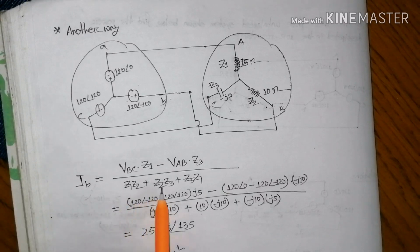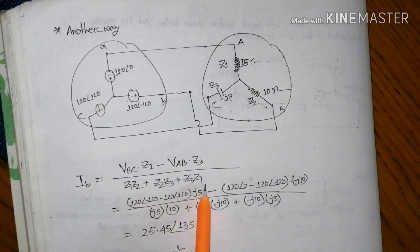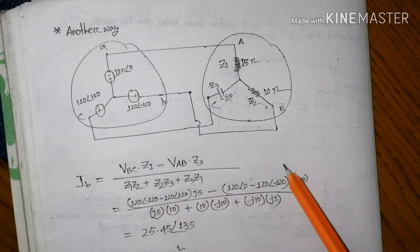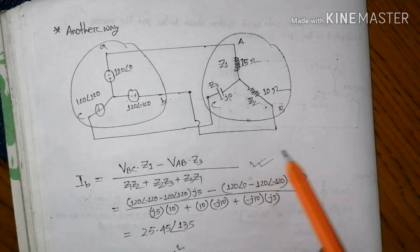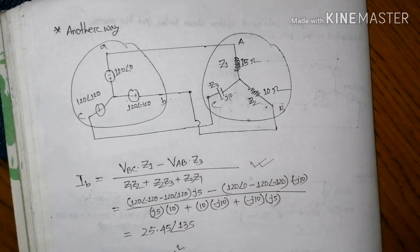The equation is: Z2·Z3 plus Z3·Z1. This is the equation for the unbalanced system.